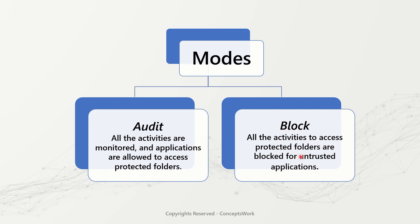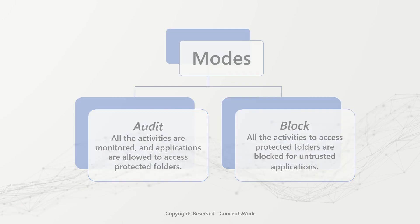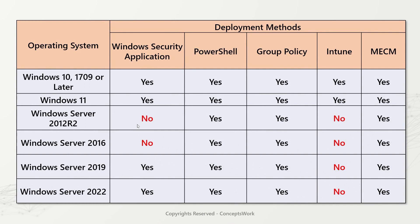As of now, this capability is only available for Windows as a platform, where it can be enabled via Windows Security application, PowerShell, Group Policy, Intune, and MECM or CCM. For Windows Server 2012 R2 and Windows Server 2016, this setting cannot be enabled from the console for all server OS, and cannot be enabled from Intune because server onboarding for Intune is not yet available.